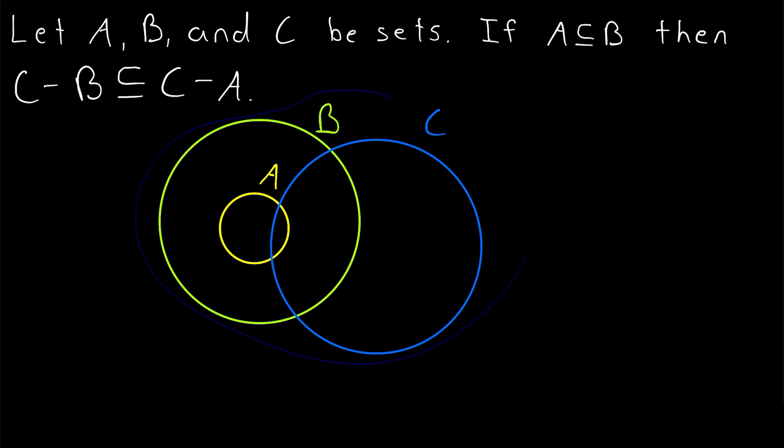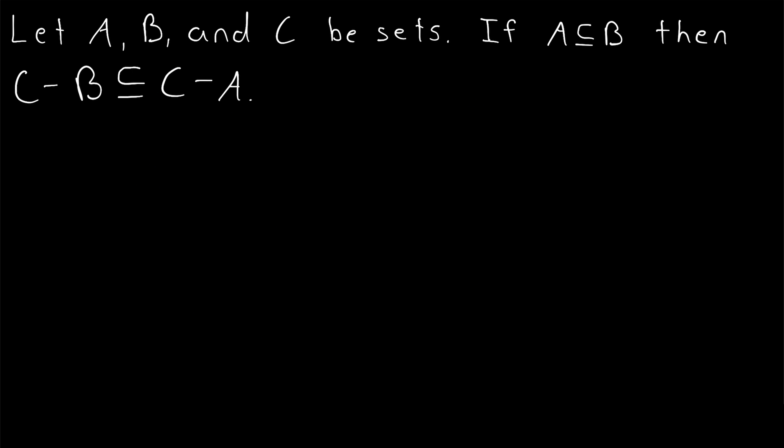But if none of that makes it crystal clear to you, the proof certainly should. To show that C minus B is a subset of C minus A, we just need to show that any element of C minus B must belong to C minus A.